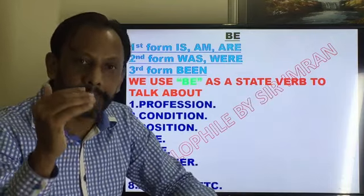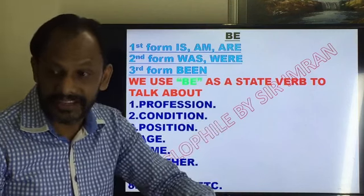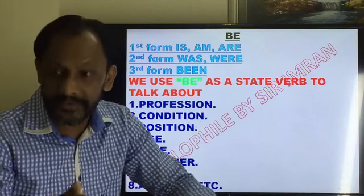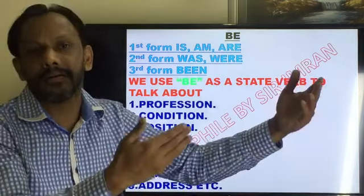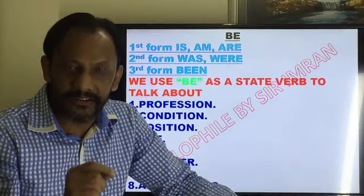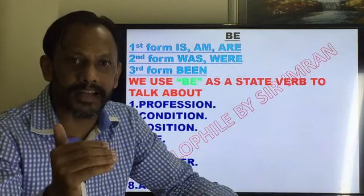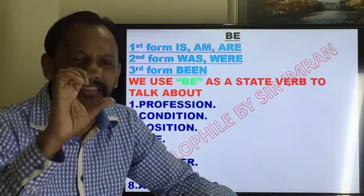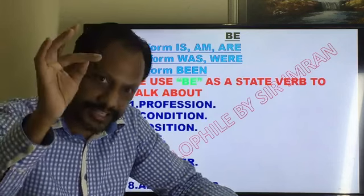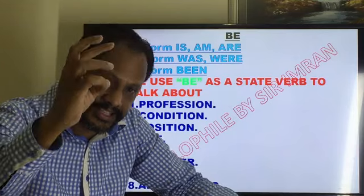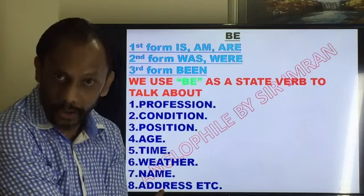When we talk about be as a state verb, it talks about your profession, condition, position, age, time, weather, name, and address. Apart from this there may be some other ways as well, but especially to make it simple for people to understand, I'm focusing on profession, condition, position, age, time, weather, name, address, etc.